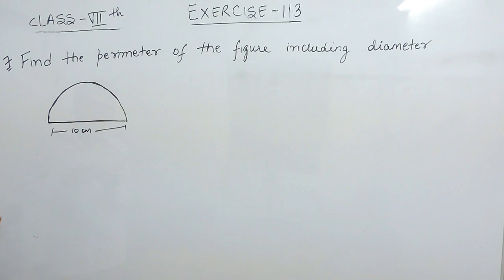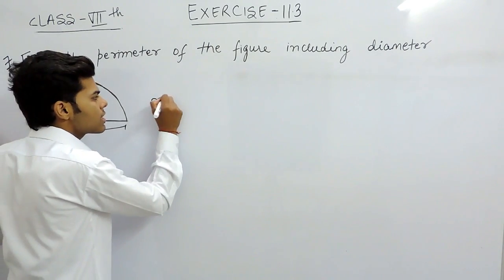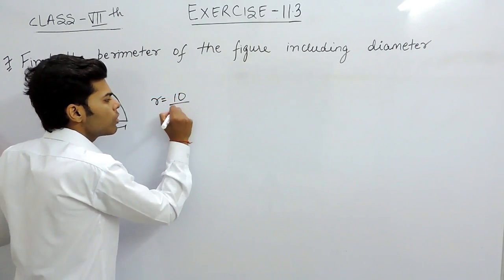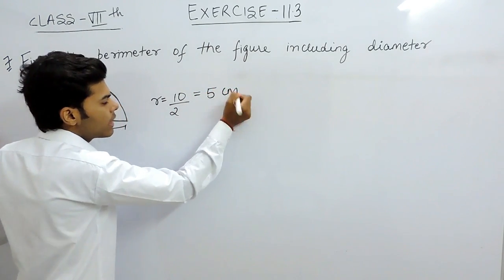Now you can see that this is the semicircle and this is the diameter. So the radius of semicircle will be equal to diameter by 2, that will be equal to 5 centimeter.